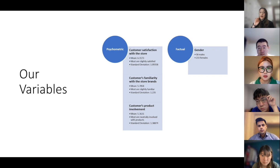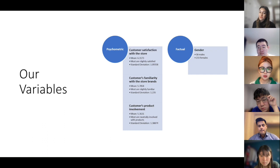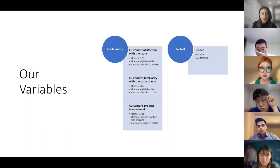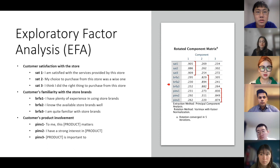In terms of psychometric variables, customer satisfaction at the store has a mean of 6.32, meaning most participants are slightly satisfied, with a standard deviation of 1.09. Customers' familiarity with store brands has a mean of 5.8, meaning most are slightly familiar, with a standard deviation of about 1.23. The last psychometric variable is customers' product involvement, with a mean of 5.4, meaning most are neutrally involved, and a standard deviation of about 1.4. For our factual variable we are using gender: 58 males and 233 females.